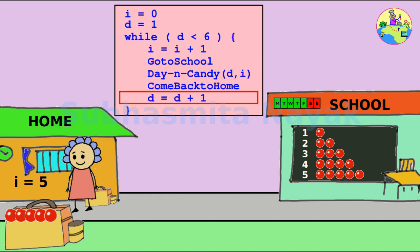Then at the end of the 5th day, d equals 5 plus 1 equals 6. Then it will not satisfy the condition and come out from the while loop.